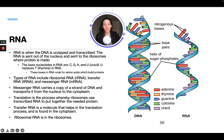Here we can compare DNA and an example of RNA. RNA is single-stranded and has no thymine — there is no yellow in the diagram — because uracil, shown in purple, has replaced thymine.